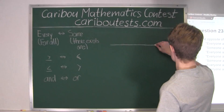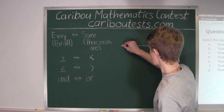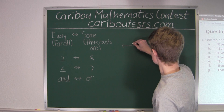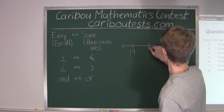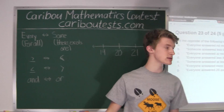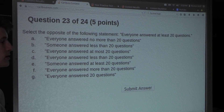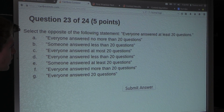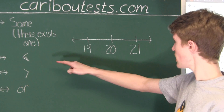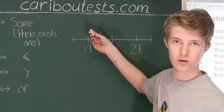Now I will draw a line which shows how many questions were answered for each option. We will have 19, 20, and 21. Let's start with the question statement. It says everyone answered at least 20 questions, so that distinguishes between answering 20 or more and also 19 or less. We will call the question statement Q.